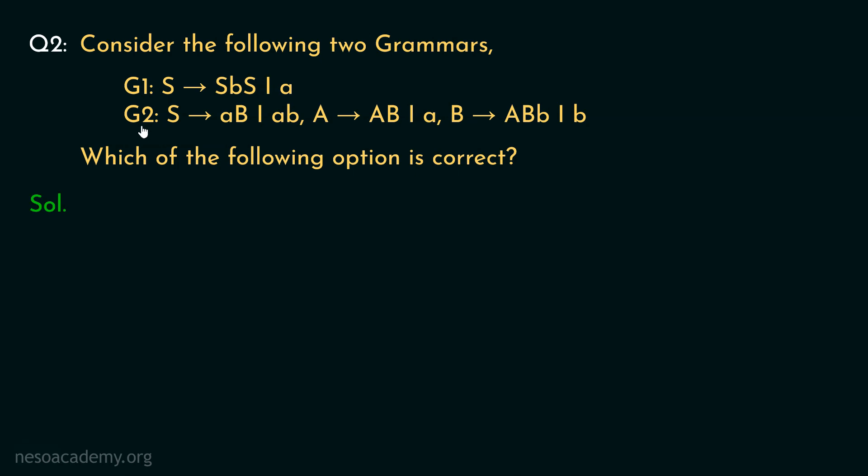So let's try to solve it. Let's begin with G1. Now G1 states, S can be written as SbS or A. So let's try to derive the string AbAbA. So as usual, we will begin with S.